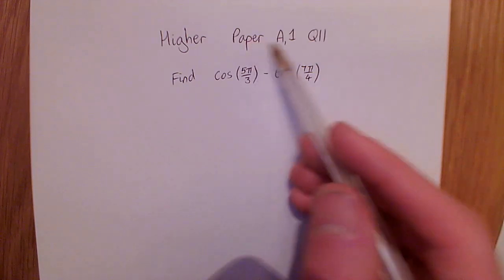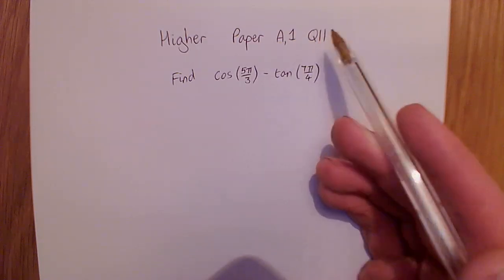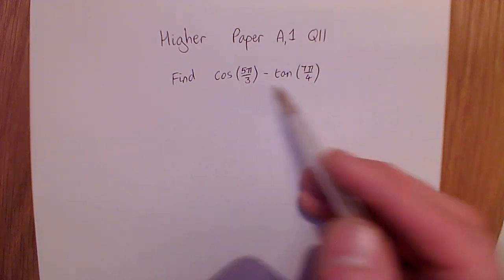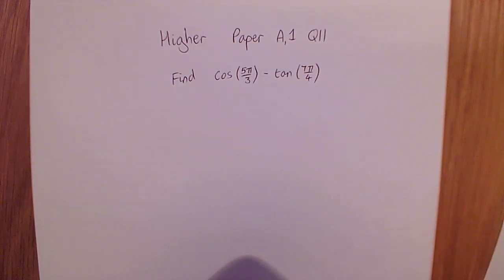This is a video about Higher Paper A, Part 1, Question 11, where we're asked to sort out this mess here and find a value for it. In this video, I'm going to do it using graphs. If you're more interested in doing it using CAST, I've made a video with CAST separately. Find the one that you think is more relevant and is going to help you more with your understanding.